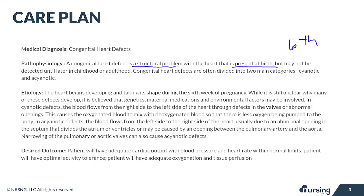There's a lot of information to cover on congenital heart defects, so it's really helpful to think about how you're going to classify and organize your information. One really common way to divide heart defects is to think about them as being cyanotic or acyanotic. The other way to think about it is to look at the way that the heart defects might be affecting blood flow.